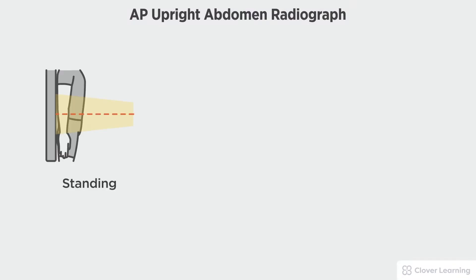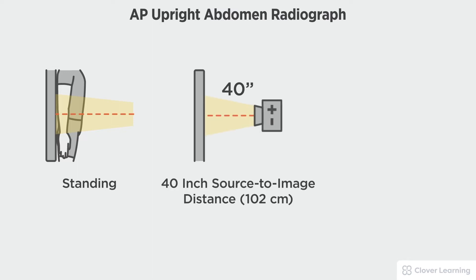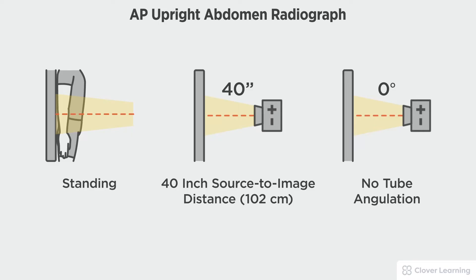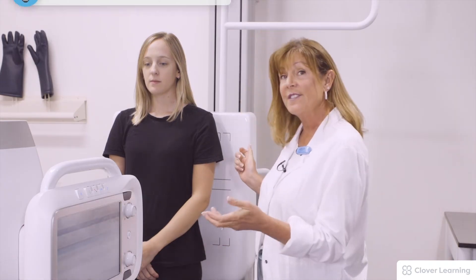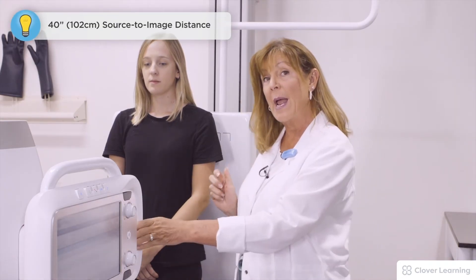In this view we will be demonstrating the AP upright abdomen. The AP upright abdomen should be performed with the patient standing upright at the Bucky with a 40-inch source-to-image distance and no tube angulation. My patient is standing at the upright board, I have 40 inches SID, and no angle on the tube.